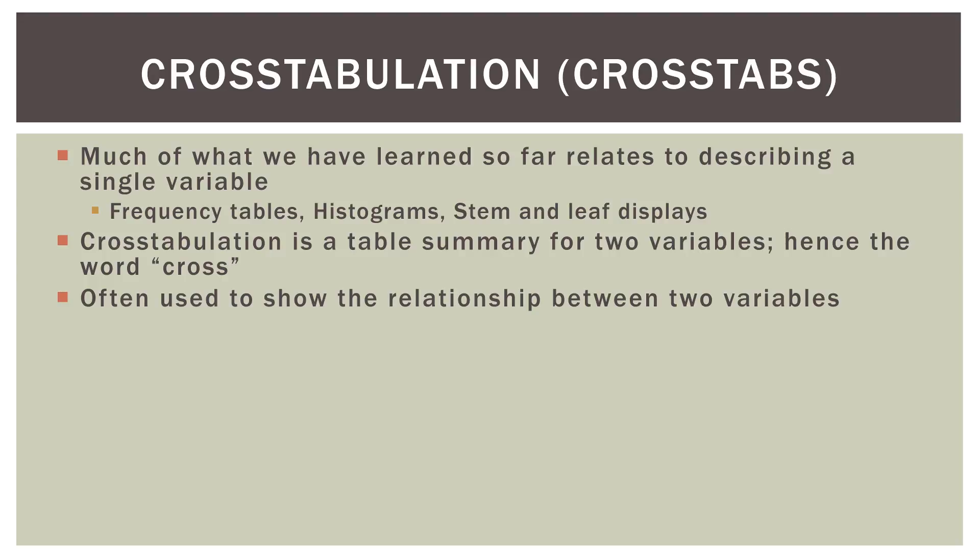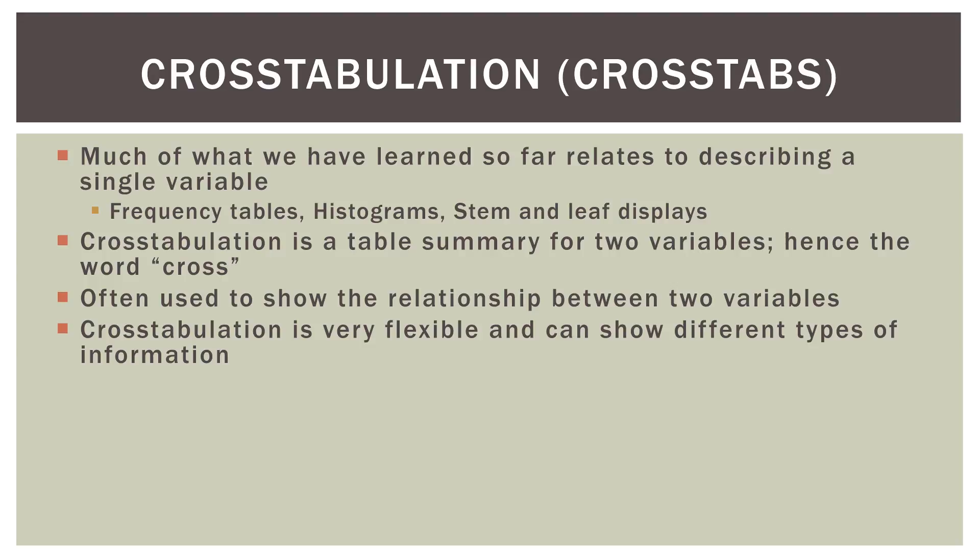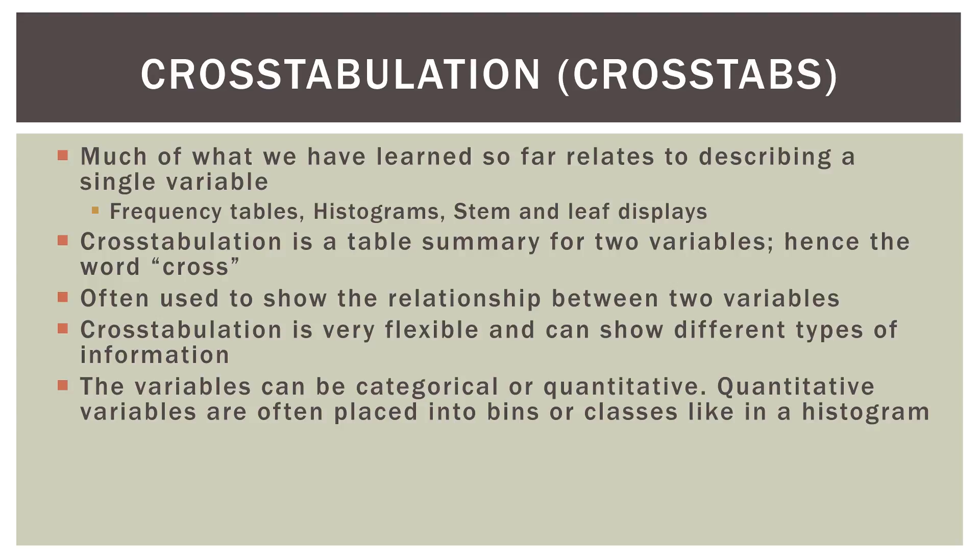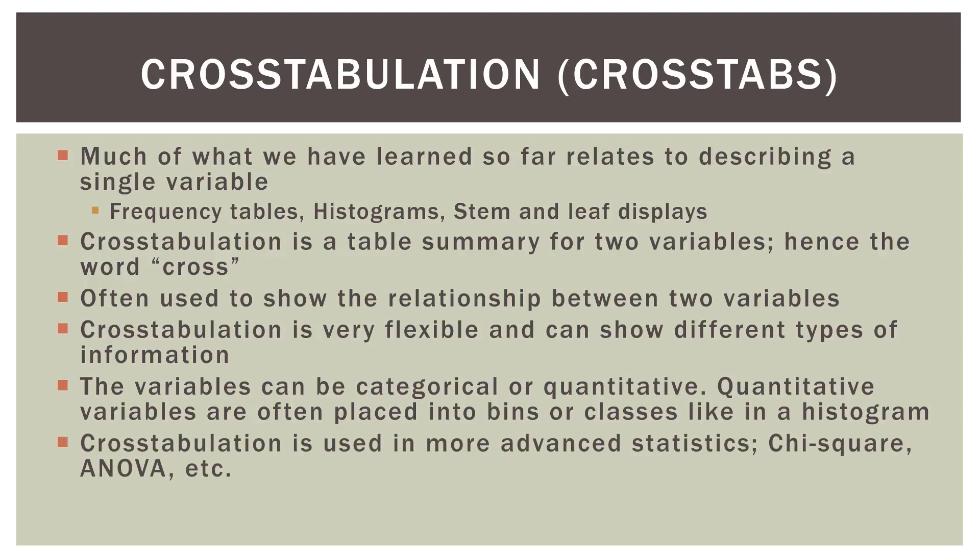Cross tabulation is often used to show the relationship between two variables. It is very flexible and can show different types of information with just a click of the mouse. The variables can be categorical or quantitative. Quantitative variables are often placed into bins or classes like we do in a histogram — for example, age groups like 20 to 29, 30 to 39, 40 to 49, et cetera. Cross tabulation is also used in more advanced statistics such as chi-square and ANOVA, so learning the basics will pay off later.